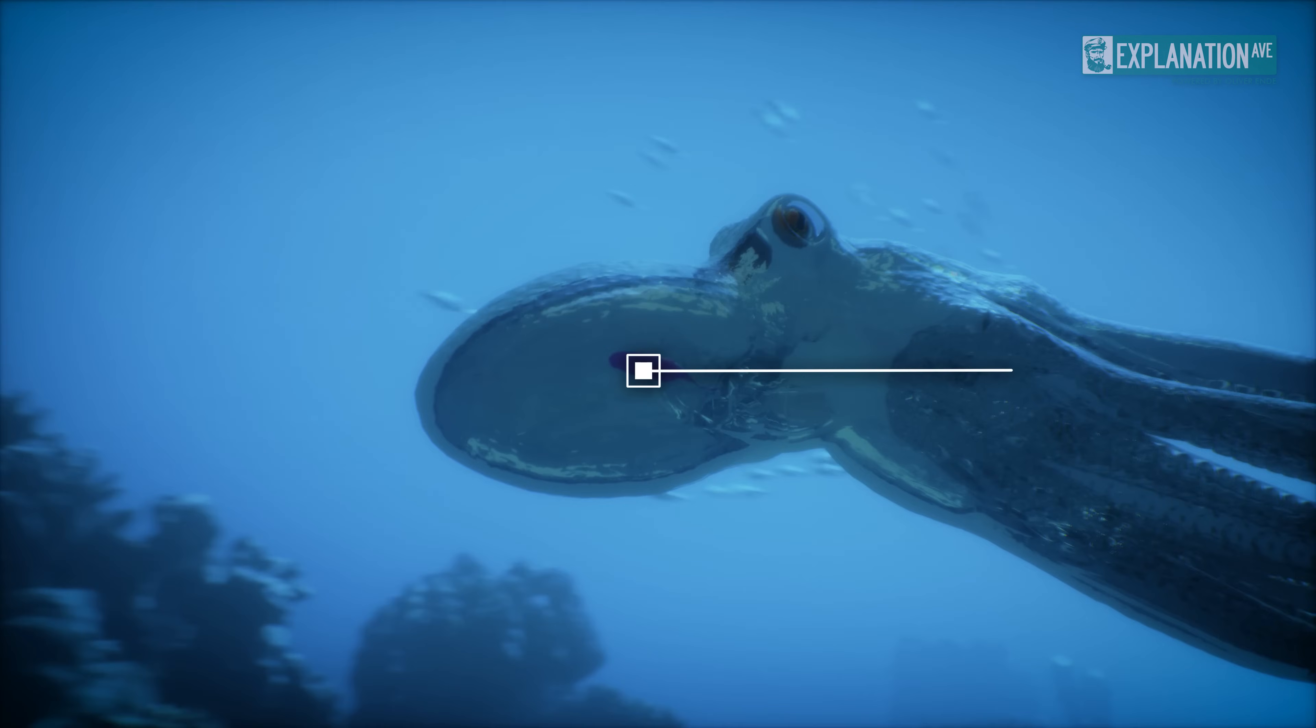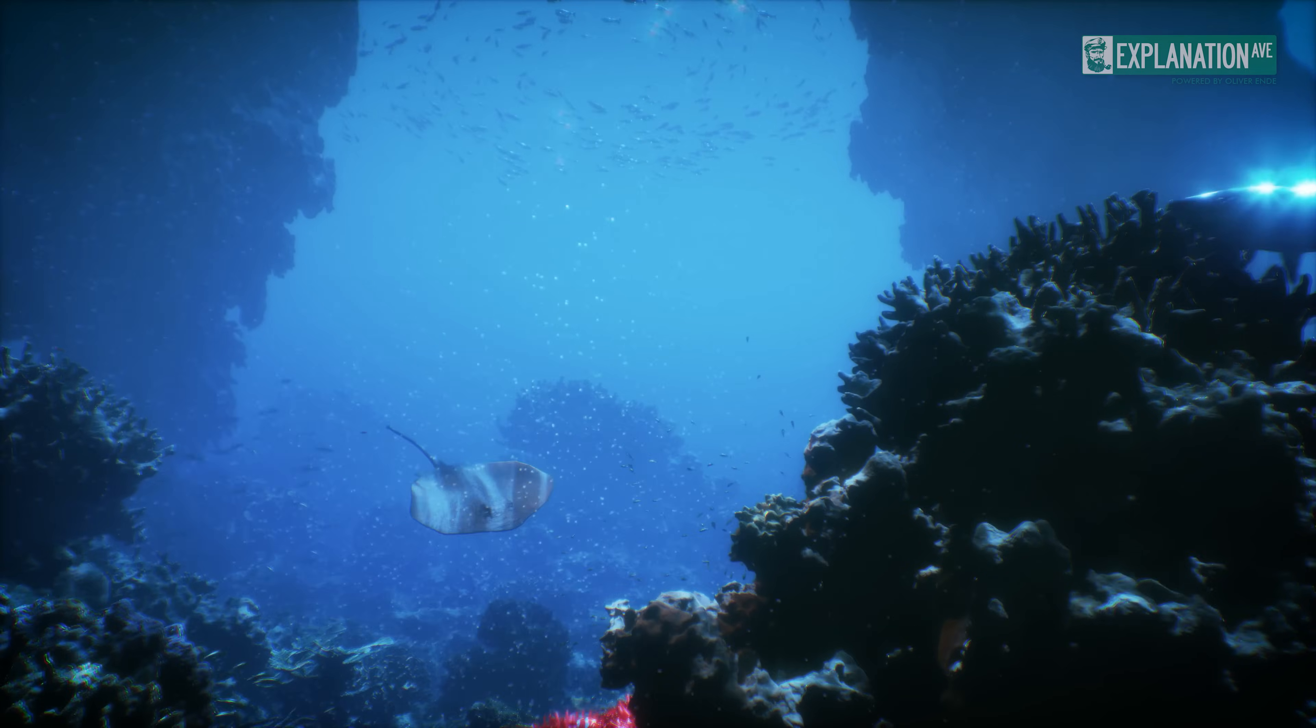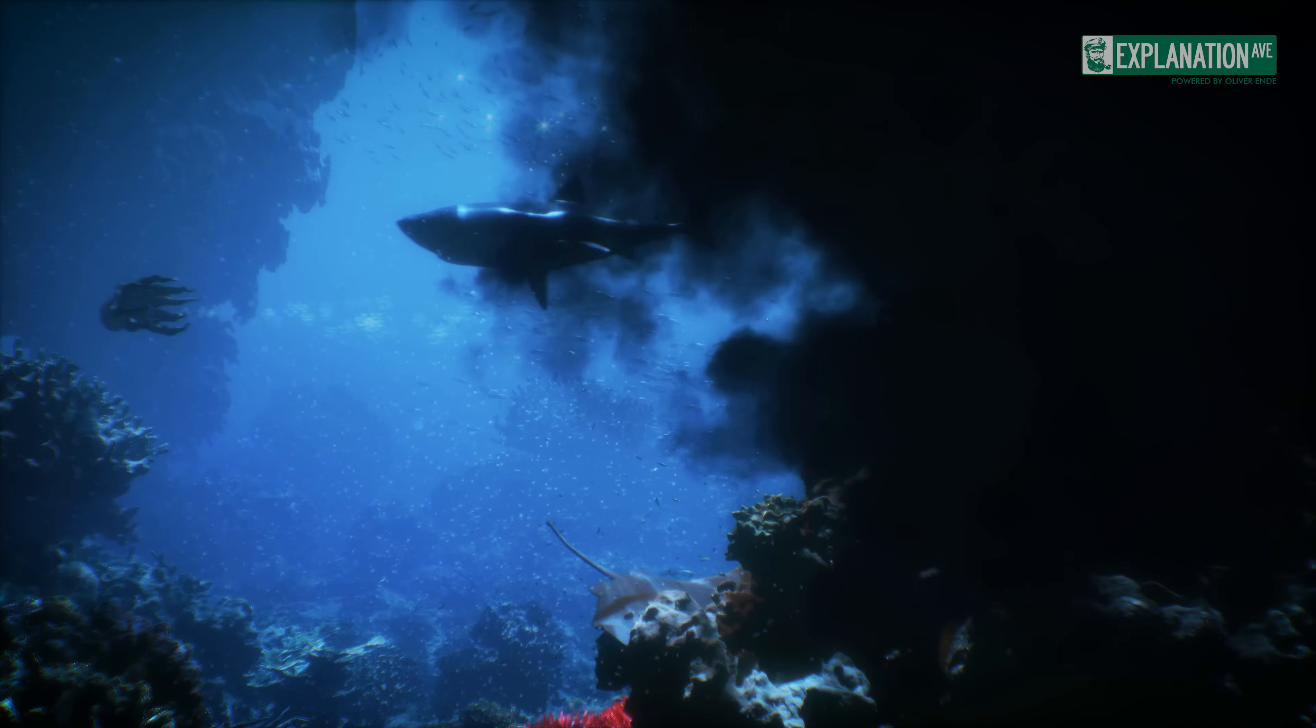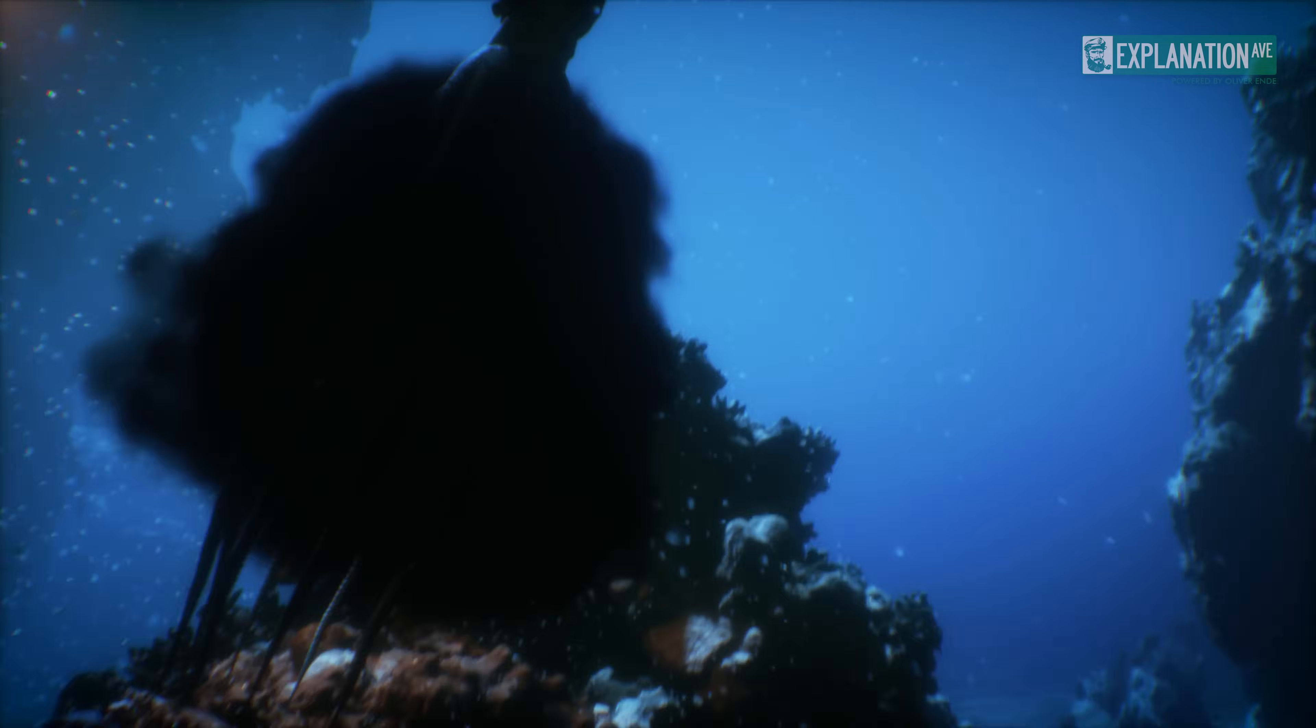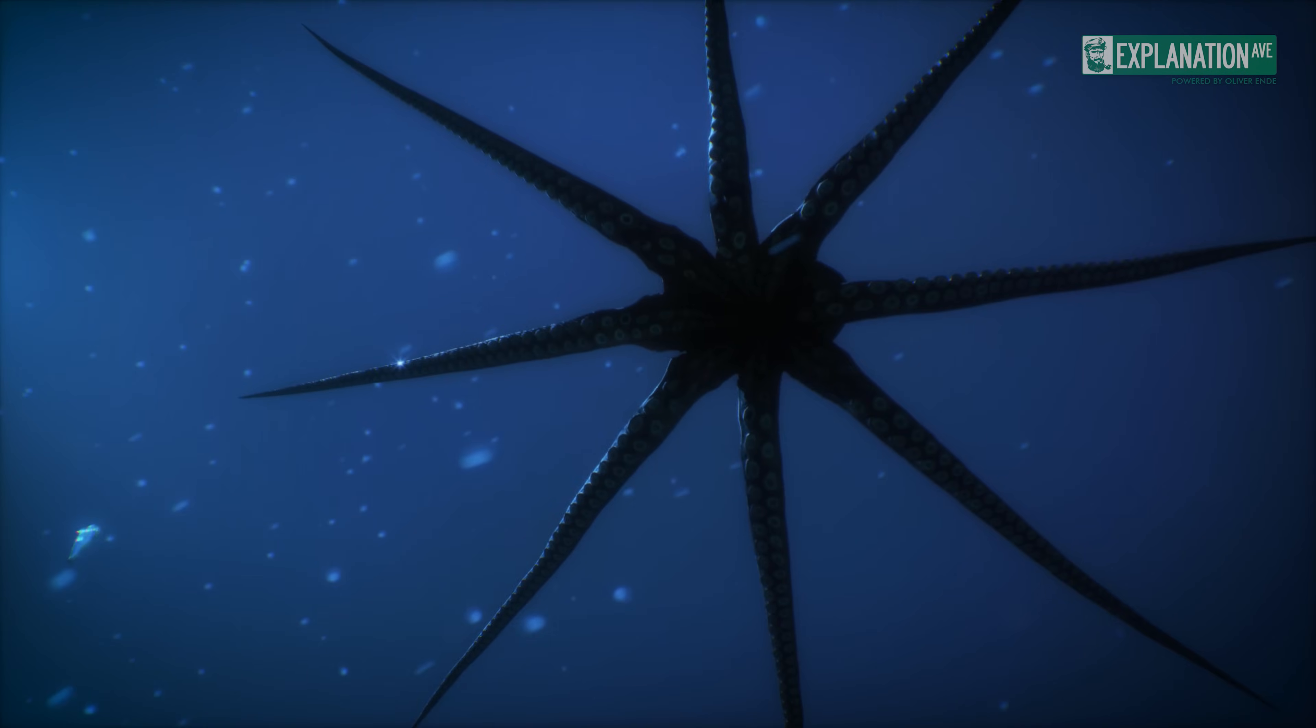The octopus ink sac, a remarkable organ located near the digestive tract, produces ink as a defense mechanism. When a threat is perceived, the octopus can release a dark cloud of ink that confuses predators and provides an escape route. Equipped with special muscles, the octopus can increase the pressure in the ink sac and thus release the ink in a targeted manner.